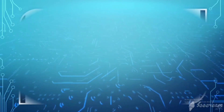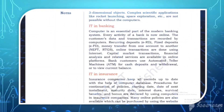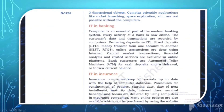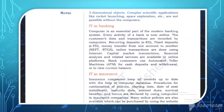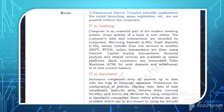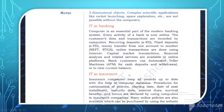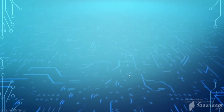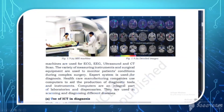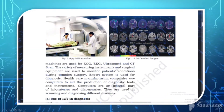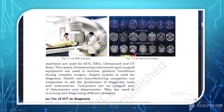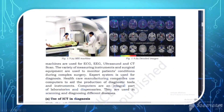The next topic is IT in science and engineering. Scientists and engineers use computers for performing complex scientific calculations. Computer-aided design (CAD) and computer-aided manufacturing (CAM) applications are used for drawing, designing, simulating, and testing by designers. Computers are also used for storing large amounts of data.